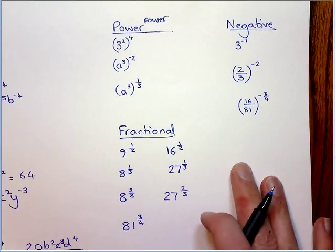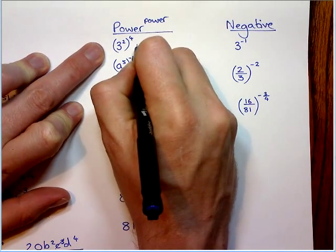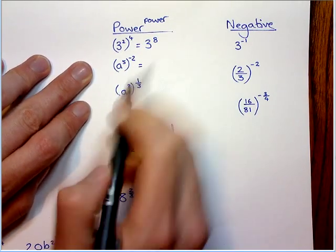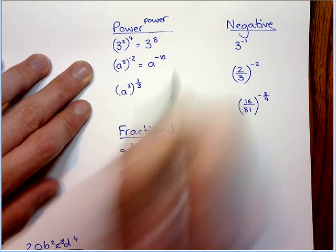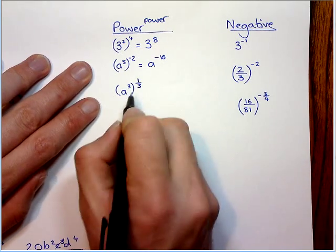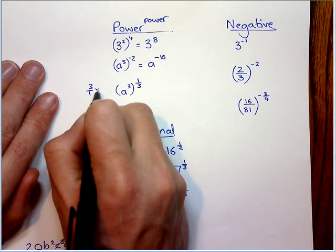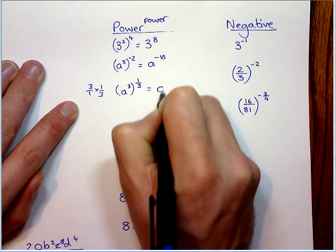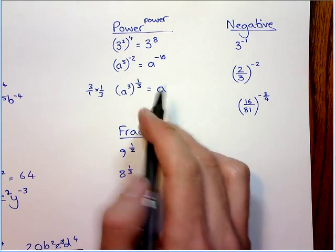Now, the power to power rule is when you have a power to another power. And you simply multiply them. So that is 3 to the power of 8. It can be a number or it can be a letter again. This would be a to the minus 10. And what's 3 times a third? Well, that's just a whole one. Remember, 3 can be written as that. And when we multiply fractions, times tops, times bottoms. So that is just simply a. So you've got a rule for adding powers, subtracting powers, and times in powers.